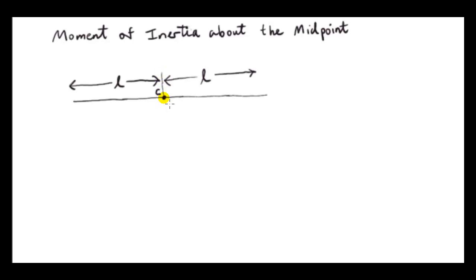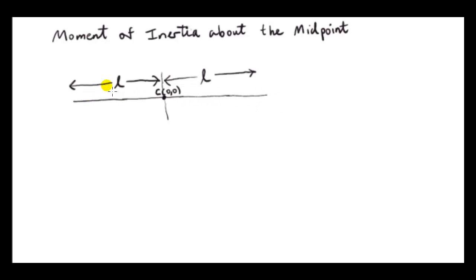We could include a y-axis if we want, but it doesn't really matter because all the action is along the x-axis. To simplify the algebra, what is conventionally done here is to say the rod has length 2L, where L is half the length of the rod, rather than simply calling the length L.